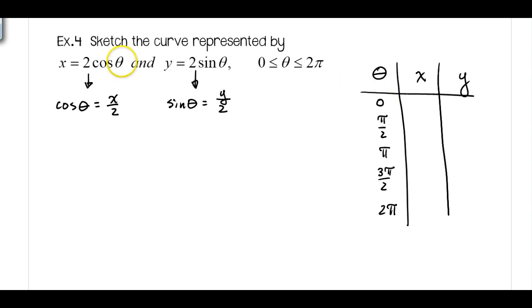When I plug 0 in for theta, I have 2 times 1 which is 2. When I plug in 0 for sine, I'm going to get 2 times 0 which is 0. Plug in pi over 2, now I'm going to get 0, 2. Plug in pi, I'm going to get negative 2, 0. If you have any questions about these, I'm just substituting in my quadrant angles for cosine and sine and multiplying by 2. 0, negative 2. And for 2 pi, I have 2, 0 again.